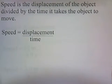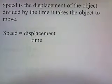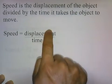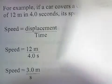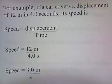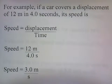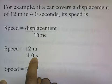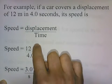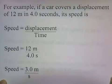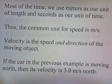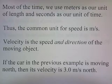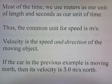Speed is the displacement of the object divided by the time it takes the object to move. For example, if a car covers a displacement of 12 meters in 4 seconds, its speed is displacement over time: 12 meters divided by 4 seconds gives 3 meters per second. Most of the time we use meters as our unit of length and seconds as our unit of time, so the common unit for speed is meters per second.